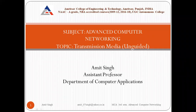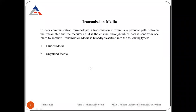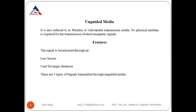The topic is transmission media — specifically the unguided media. In data communication, the transmission media is the path between the transmitter and the receiver, the channel through which data is sent from one place to another. Transmission media is broadly classified into two categories: guided and unguided. In previous slides we discussed guided media; now we are discussing unguided media, also called wireless.